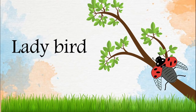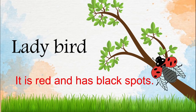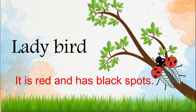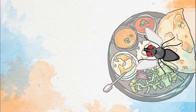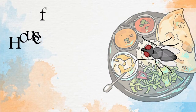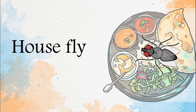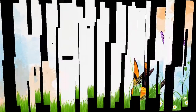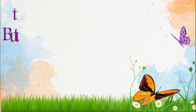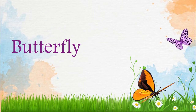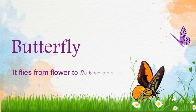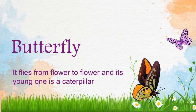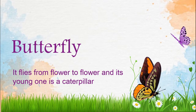Ladybird! It is red and has black spots — how nice! How about the fly? It sits on food. Butterfly! It flies from flower to flower, and its young one is a caterpillar.